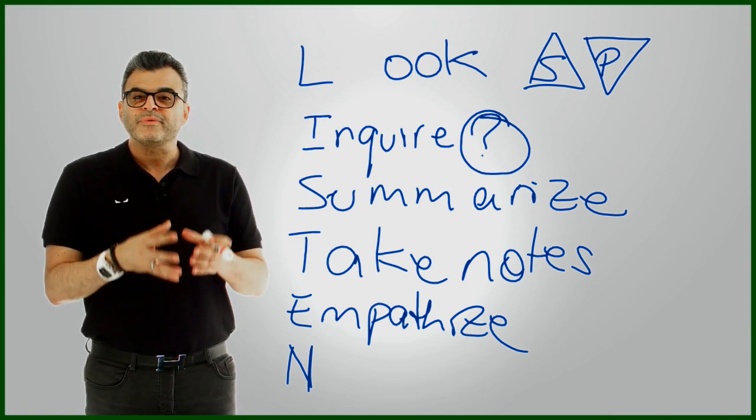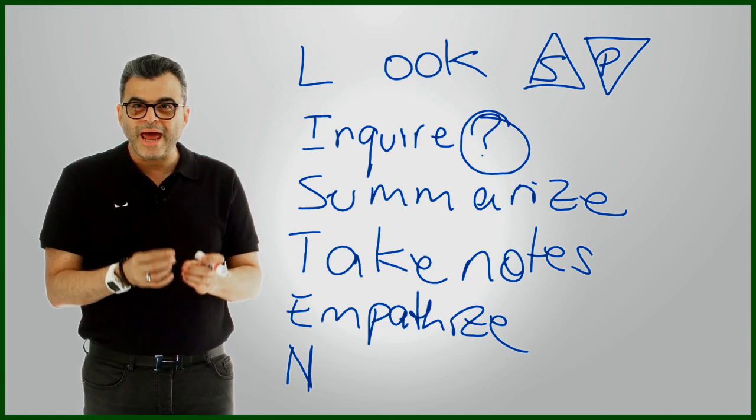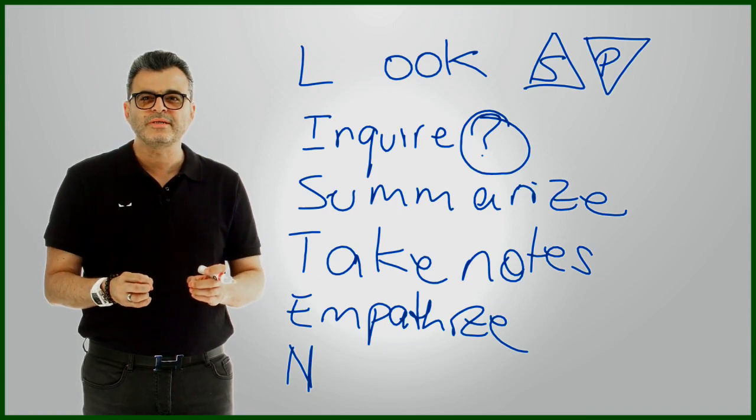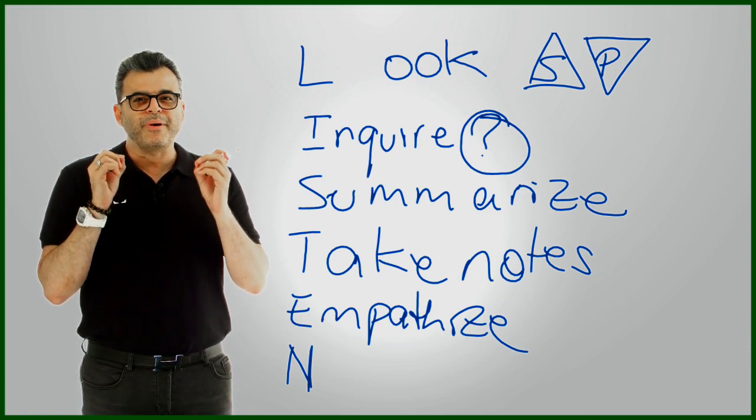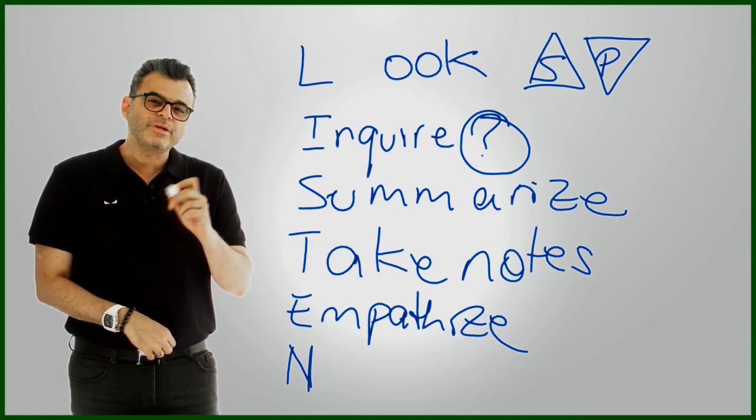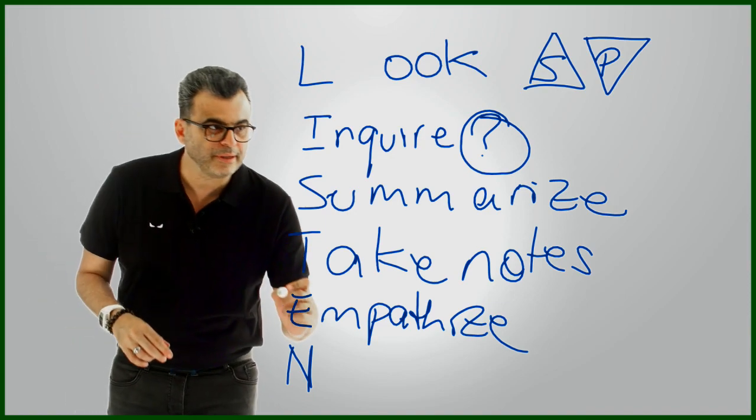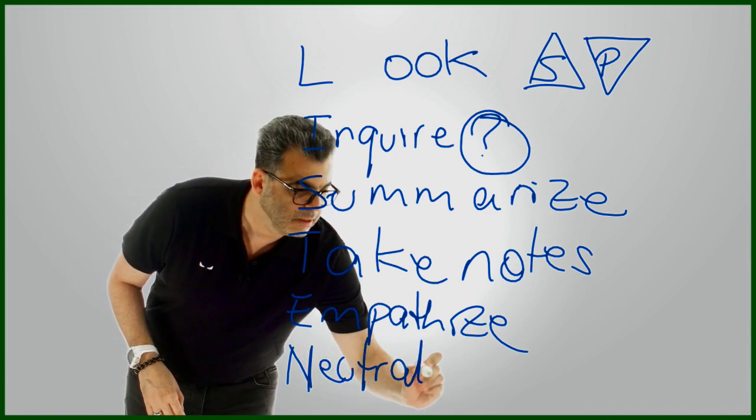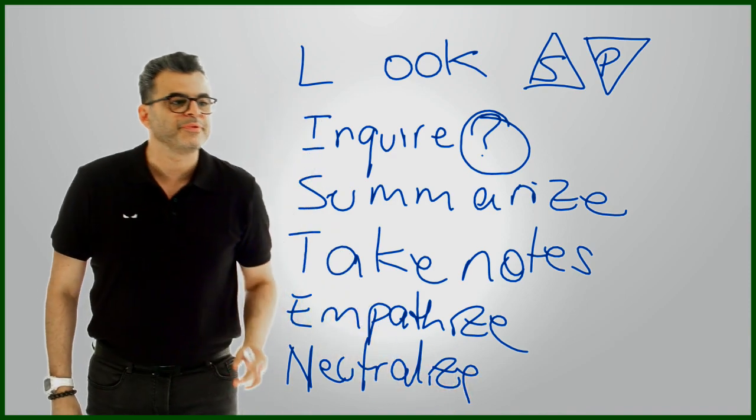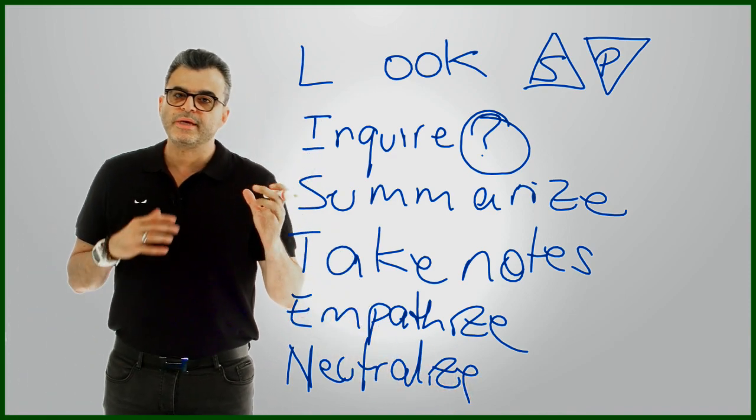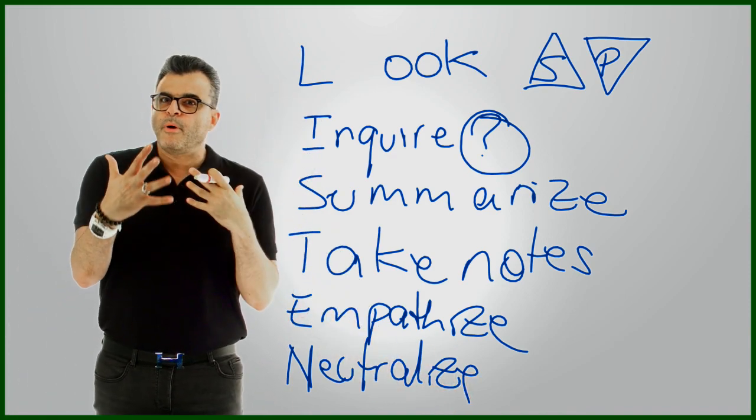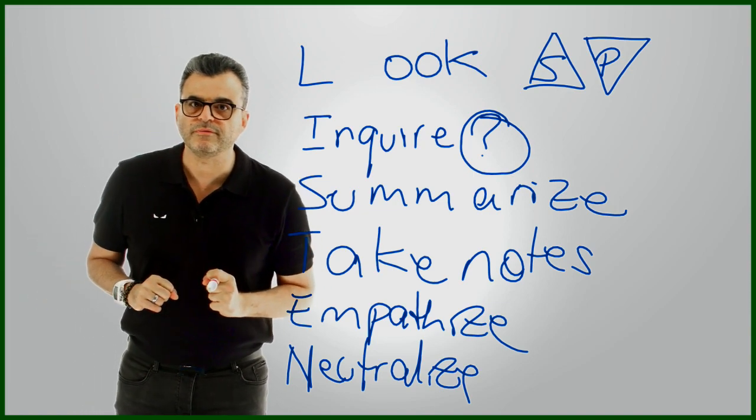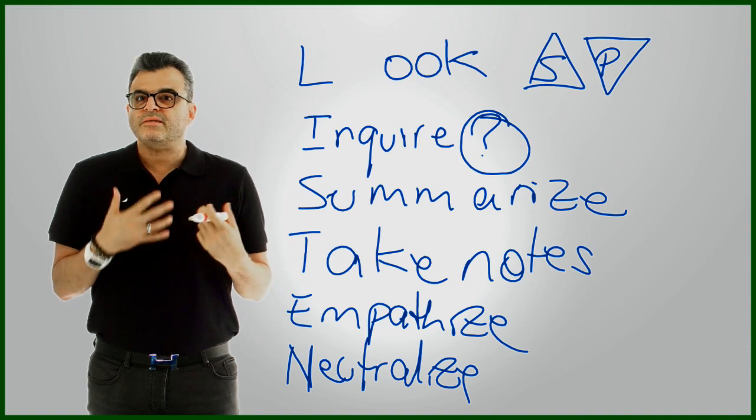And empathy, again, is one of the most sought-after qualities in today's leaders and friends and loved ones. And empathy is the best way to connect with people. Now, what does N stand for? This is a little bit more complicated. N is about neutralize. What does neutralize mean? Now, think about it this way. Empathy is emotional mirroring. You're mirroring the emotions of the person in front of you. Neutralize is physical mirroring.